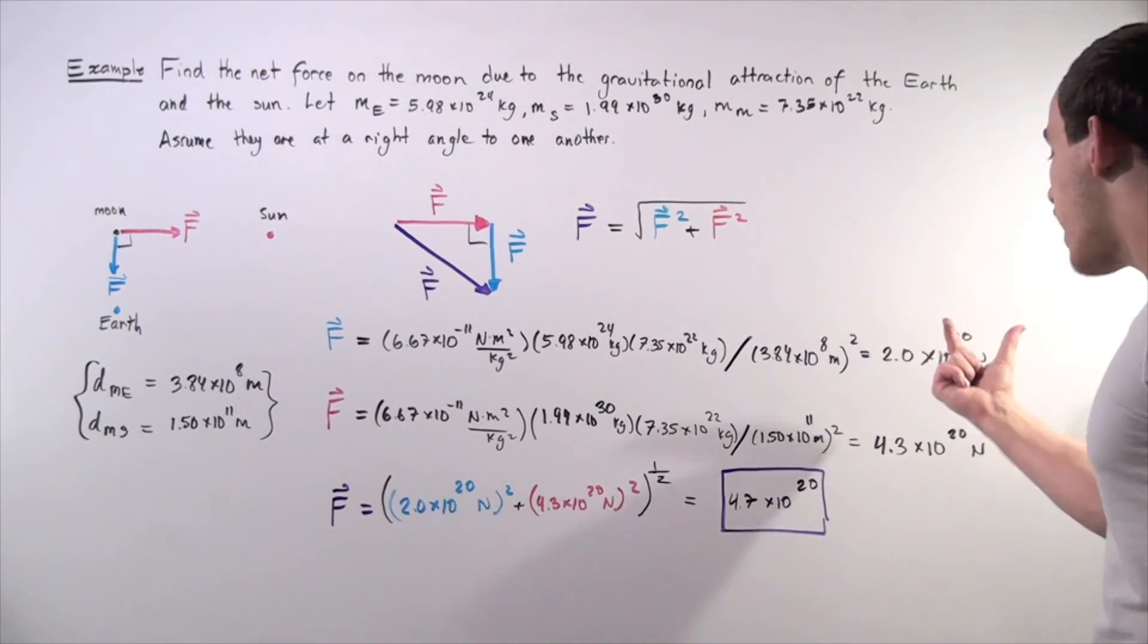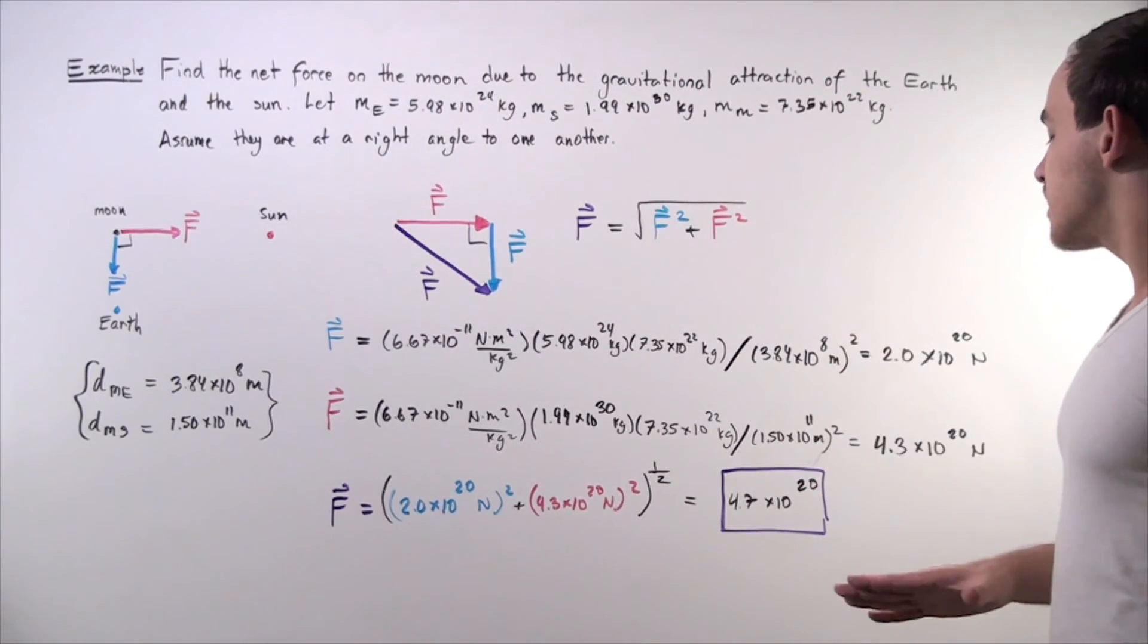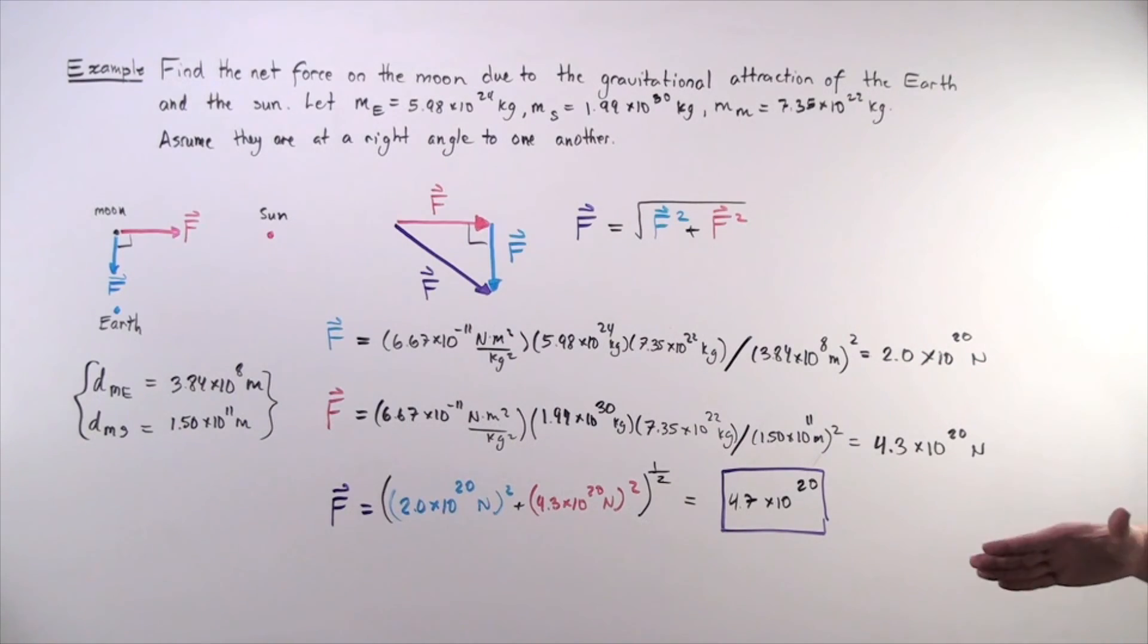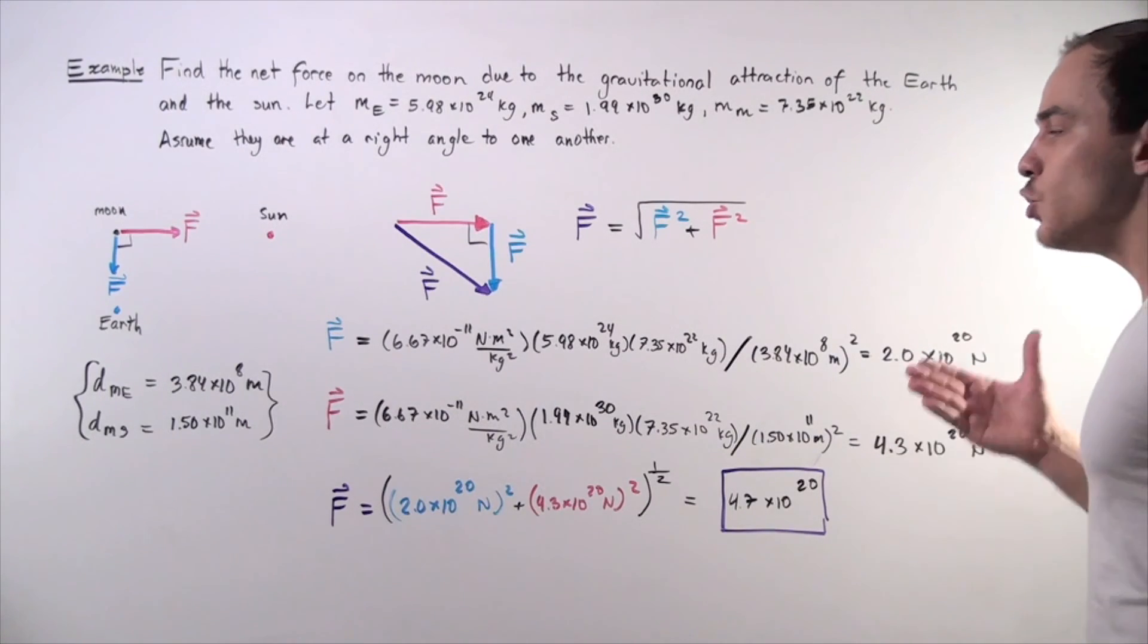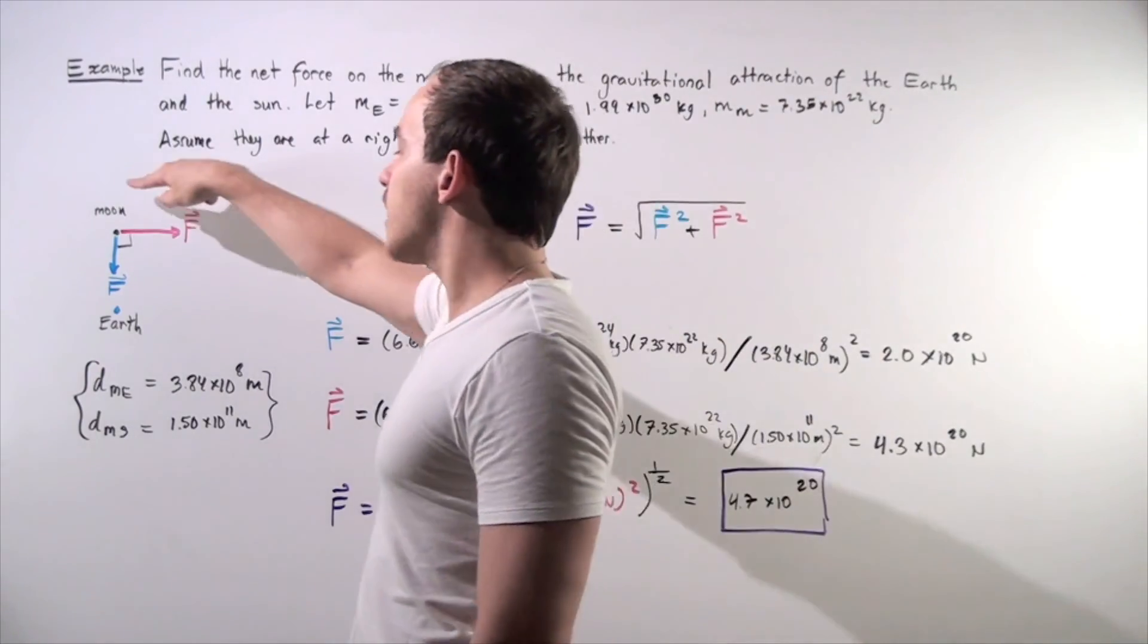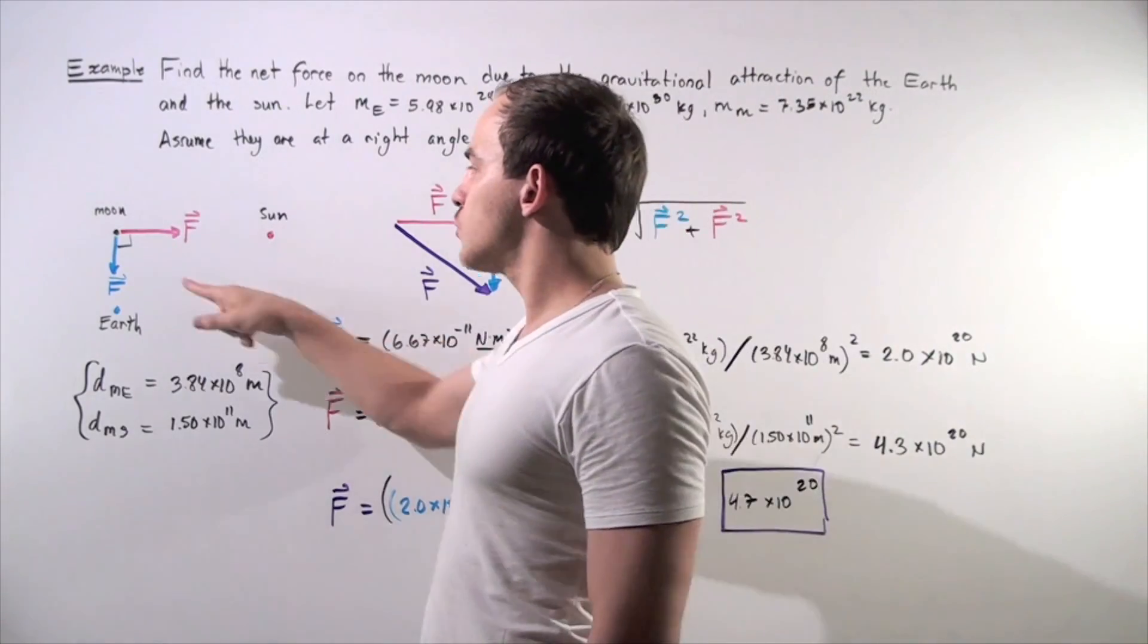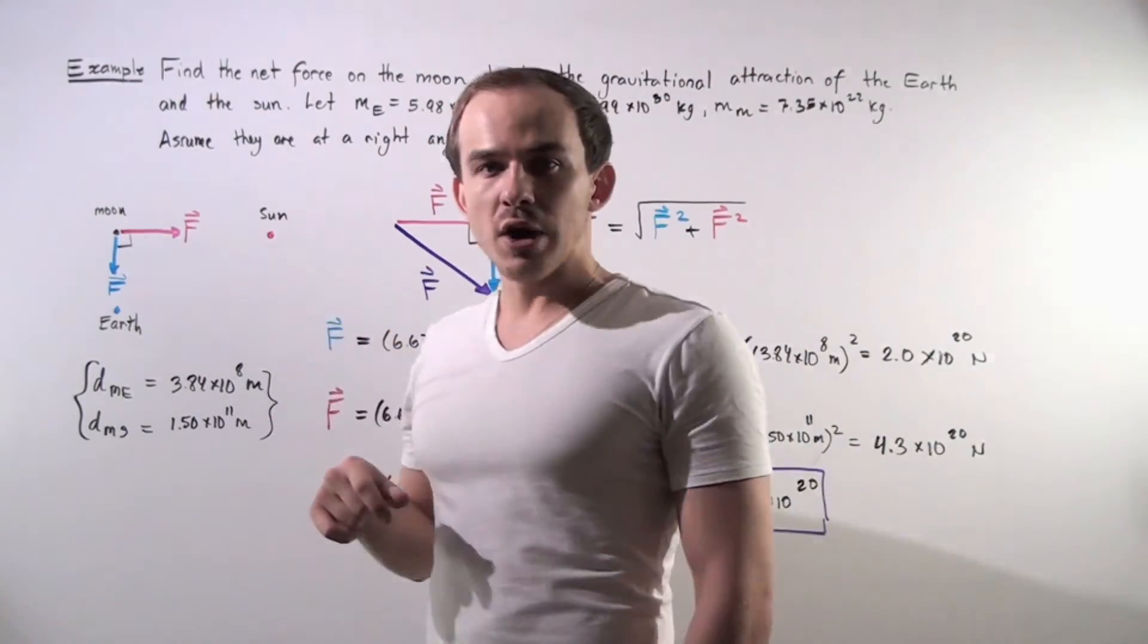So now in the final step, we simply take the square and sum that up, and we take the radical, and we get approximately 4.7 times 10 to the 20 Newtons is the net force acting on our Moon. So because the net force points in this direction, the Moon will also travel in this direction.